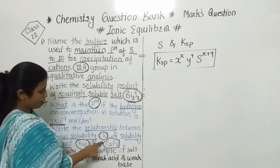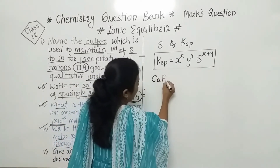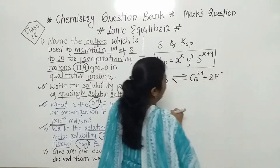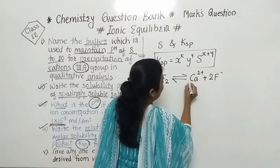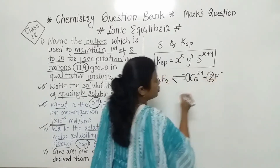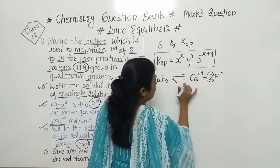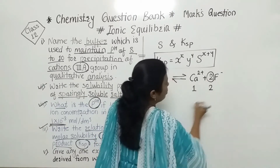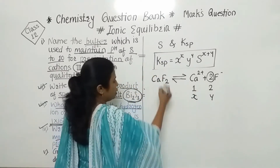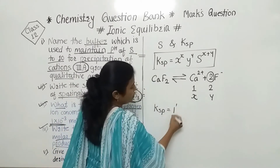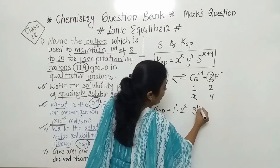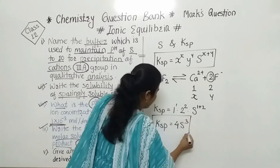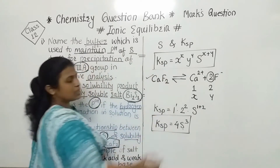For CaF₂, when dissolved in water it dissociates as: CaF₂ → Ca²⁺ + 2F⁻. Here X (number of moles of cation) = 1, and Y (number of moles of anion) = 2. Putting values into the formula: 1¹ × 2² × S^(1+2), we get Ksp = 4S³. This is the relationship between molar solubility and solubility product for CaF₂.